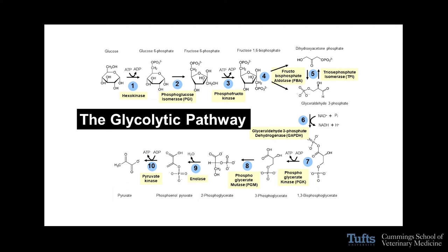That is of course somewhat of a surprise. We know glycolysis as a 10-enzyme-driven pathway that results in the generation of the high-energy molecule ATP as well as NADH. It's a very ancient pathway used by all life forms. So the notion that enzymes that are part of this intracellular pathway are found on the surface of the intravascular worm was somewhat of a surprise.